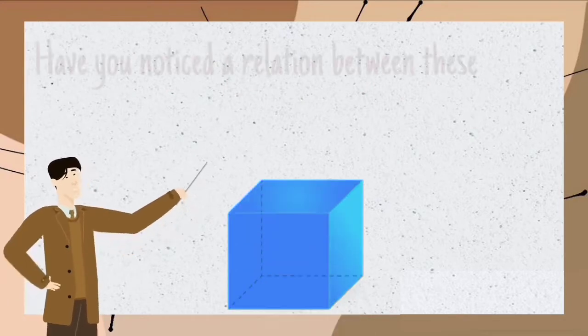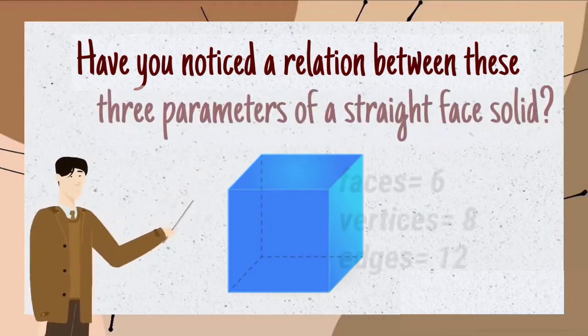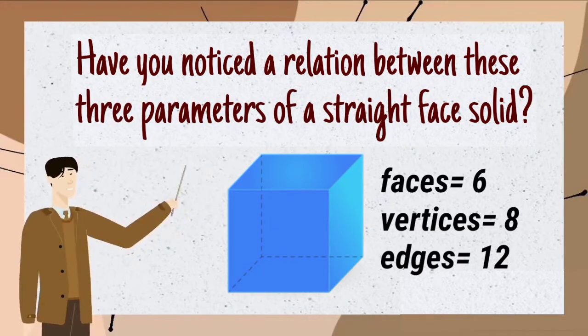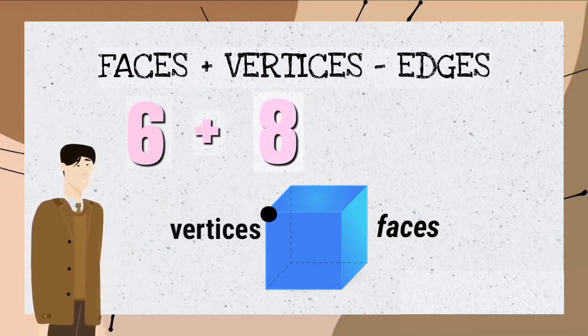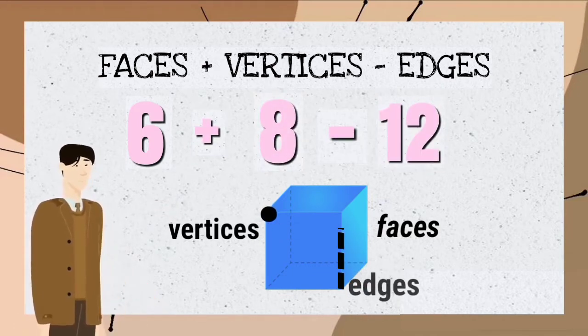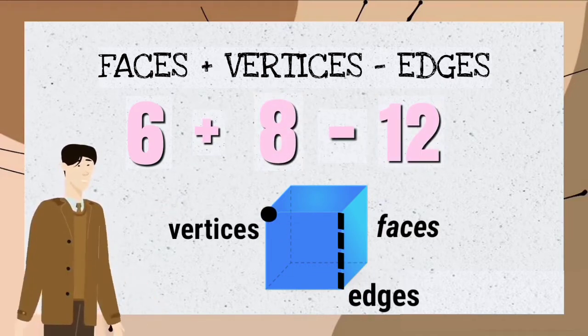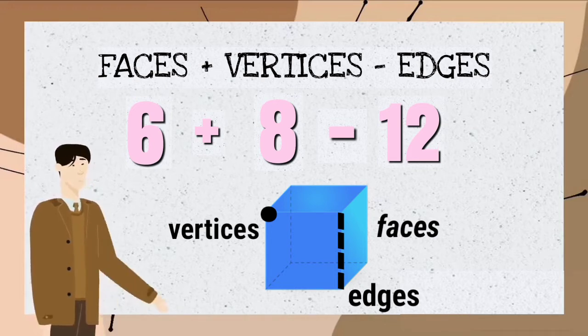Now, have you noticed a relation between these three parameters of a straight-faced solid? There is! If we add the number of faces to the number of vertices, then subtract the number of edges, we get one special number. And that number is two.